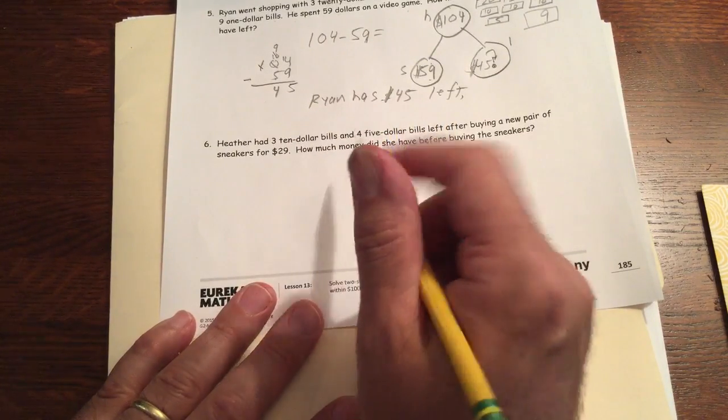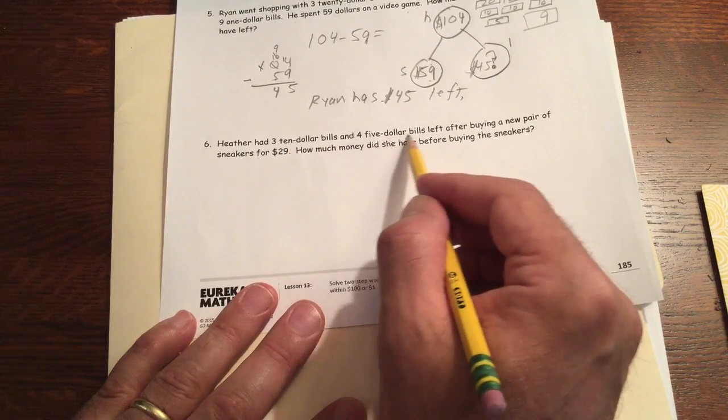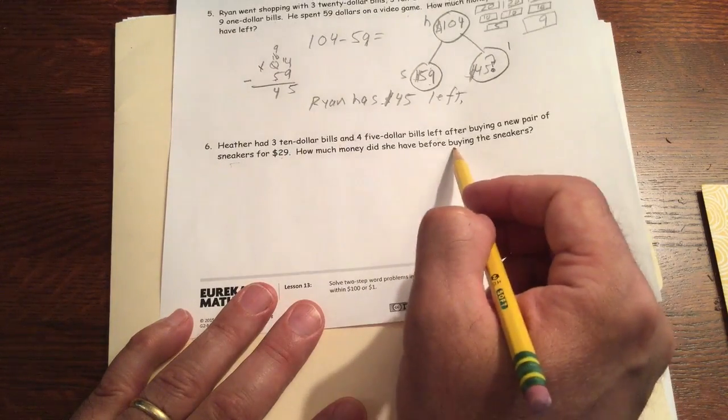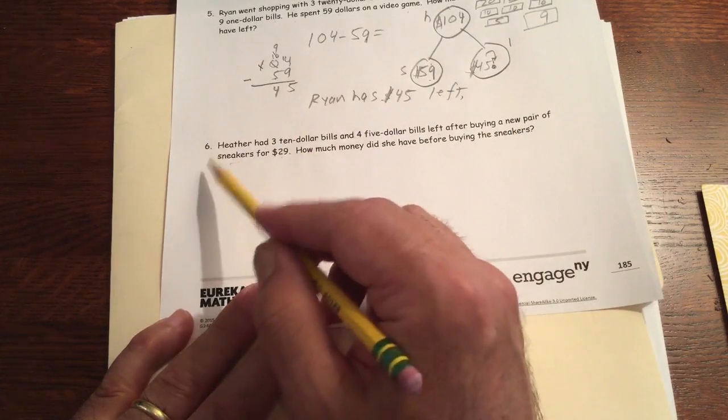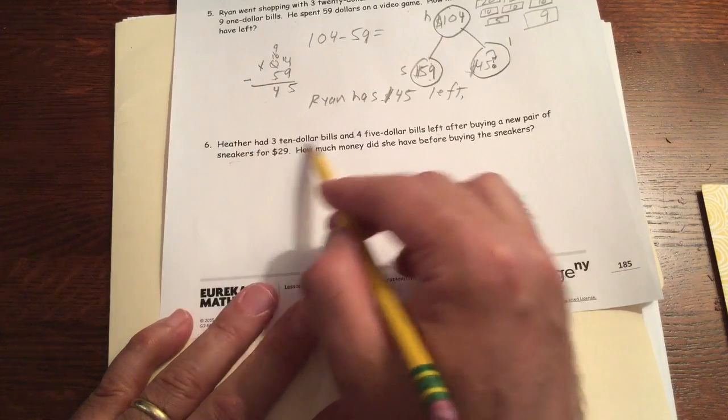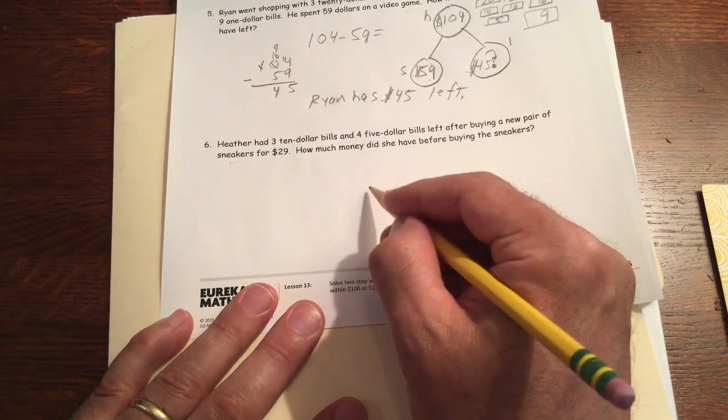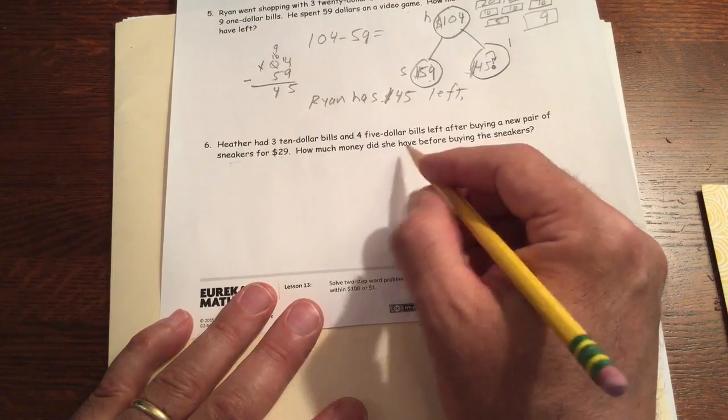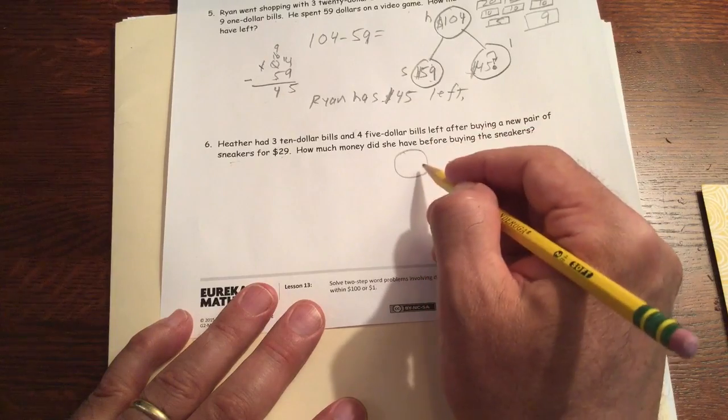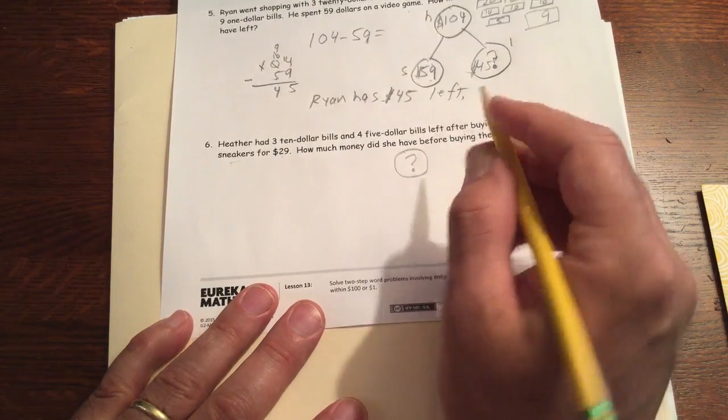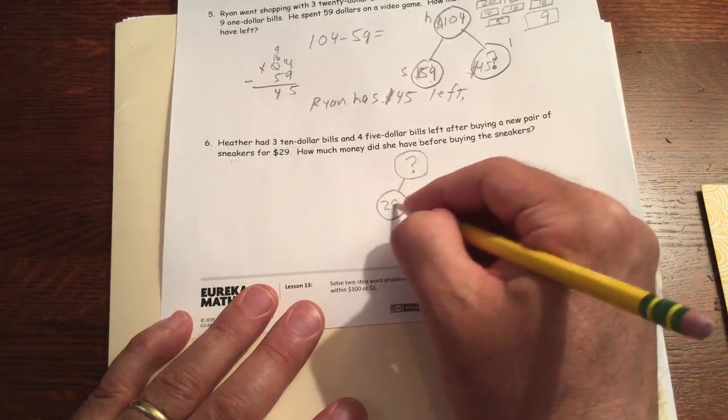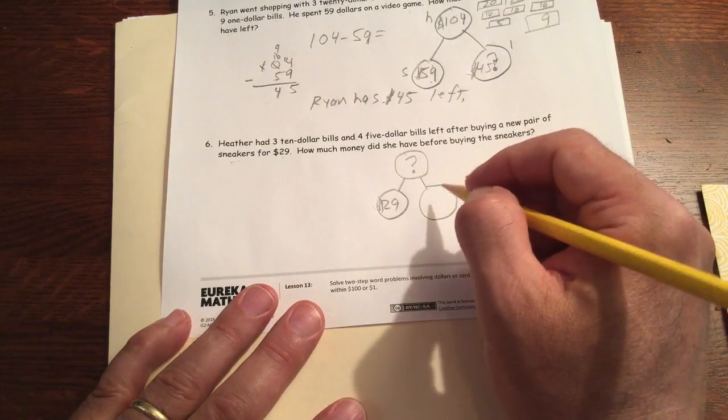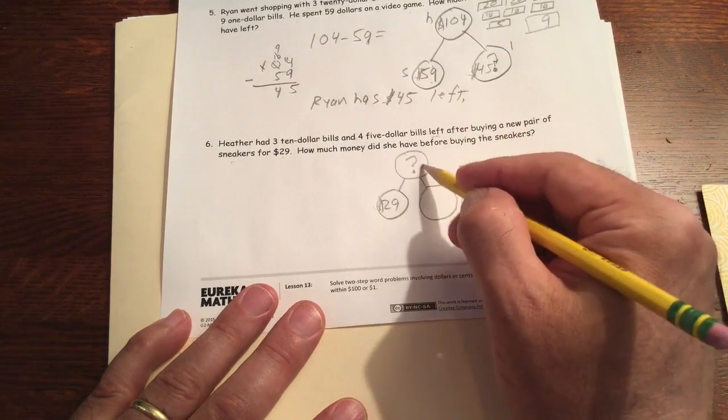And here's an example of it. Heather had three $10 bills and four $5 bills left after buying a new pair of sneakers for $29. How much money did she have before buying the sneakers? So she would have had more money before she bought the sneakers. So that's going to be... The total is how much money she had before. The sneakers were $29, and this is how much she had left. And we need to know how much she had before.